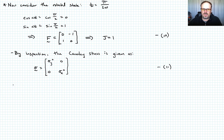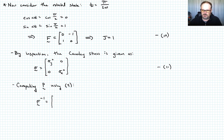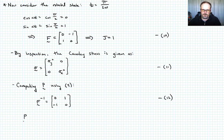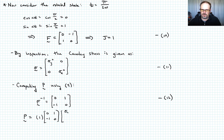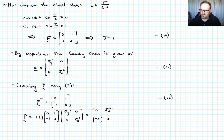Now we compute the nominal stress P using equation four. The inverse of the F matrix from equation ten is obtained by swapping the signs on the ones: F⁻¹ equals [0, 1; -1, 0] — equation 12. So P equals one times [0, 1; -1, 0] times [sigma_y naught, 0; 0, sigma_x naught]. Performing the matrix multiplication gives P equals [0, sigma_x naught; -sigma_y naught, 0] — equation 13.